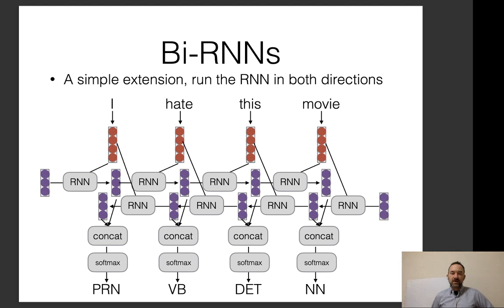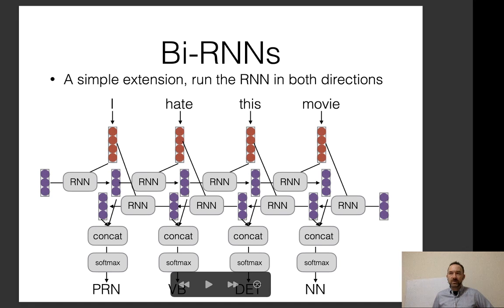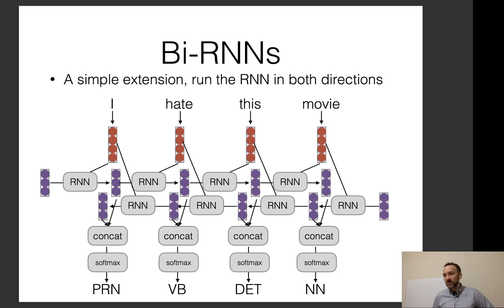Language modeling does not work with bidirectional RNNs if you're processing left to right, because to calculate the probability of a sentence you multiply the probability of the first word by the probability of the second word given the first, and so on — the normal left-to-right decomposition. If you have information about future words it's not a well-formed probability. Also, you can't generate from a model that requires context in both directions. There's another variety called masked language modeling, which we'll cover when we get to pre-trained language models.